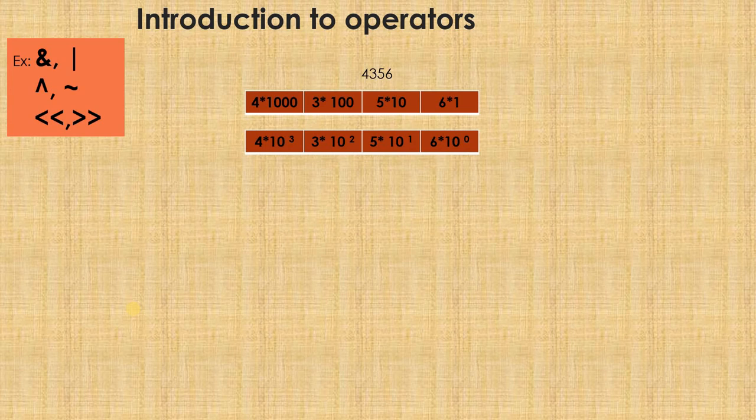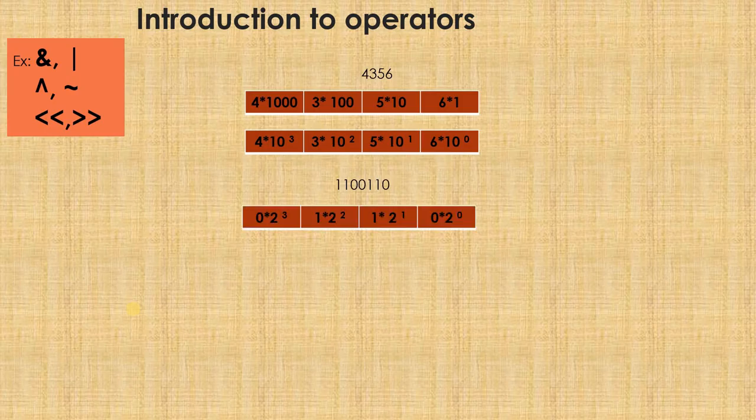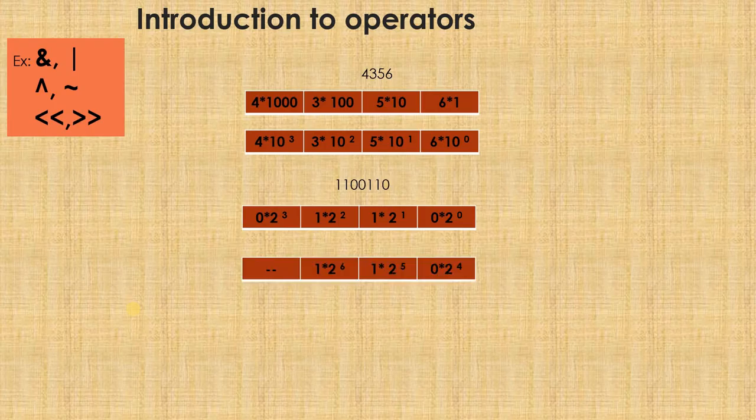This is what we have seen in the decimal number system. And the same thing holds good when it is a binary number system. For example, if a binary number is given to you, the same way we have: 1 into 2 raised to 2, 0 into 2 raised to 0, 1 into 2 raised to 1 — starting from the units place, from the LSB — then 1 into 2 raised to 2, 0 into 2 raised to 3, 0 into 2 raised to 4, 1 into 2 raised to 5, and 1 into 2 raised to 6.